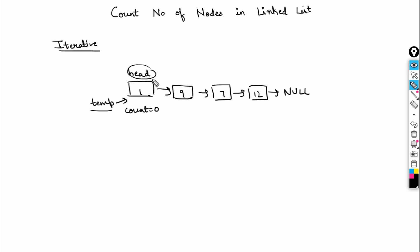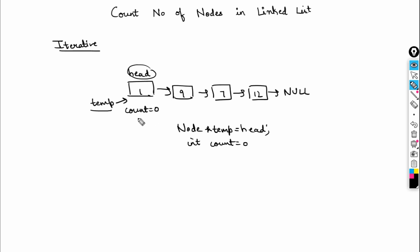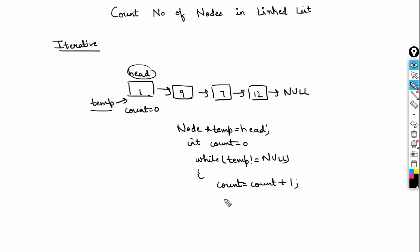I use a temp variable rather than iterating with the head variable itself, because if I do that, the address of the head will be lost and my list will be lost. So I set node* temp equal to head, and take a counter initialized to zero. Then, while temp is not equal to null, I do count = count + 1 and temp = temp->next.